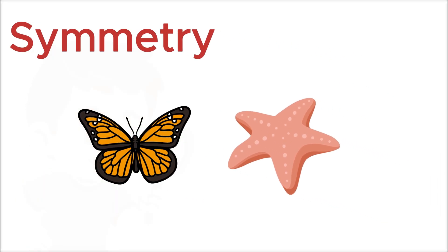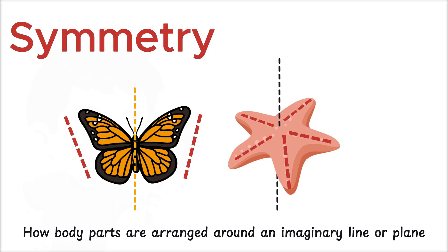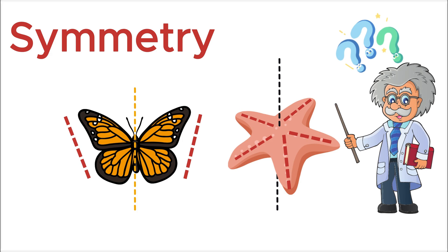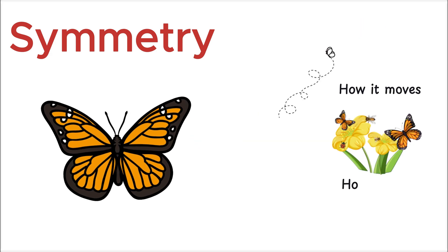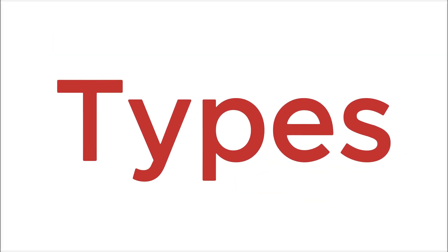In simple terms, symmetry refers to how body parts are arranged around an imaginary line or plane. It's one of the key features scientists use to classify organisms. Why? Because the type of symmetry an organism has can tell us a lot about how it moves, how it feeds, and even how it evolved. So, let's break down the different types of symmetry and understand what they reveal about the living world.